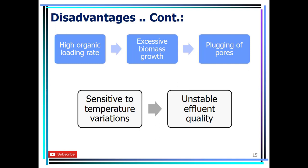Additional problems include high organic loading rates causing excessive biomass growth — more food means more bacteria growth — which causes plugging of the pores, reducing efficient air ventilation and decreasing treatment efficiency. The system is also sensitive to temperature variations, making the effluent quality unstable and inconsistent over time. Some days effluent quality may be good, but higher or lower temperatures can cause changes that are not desirable.